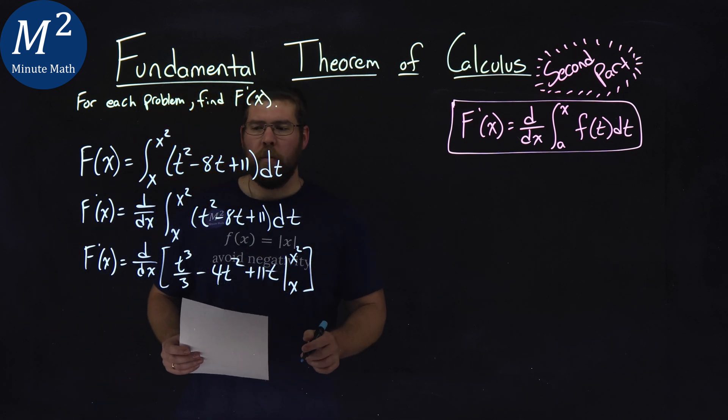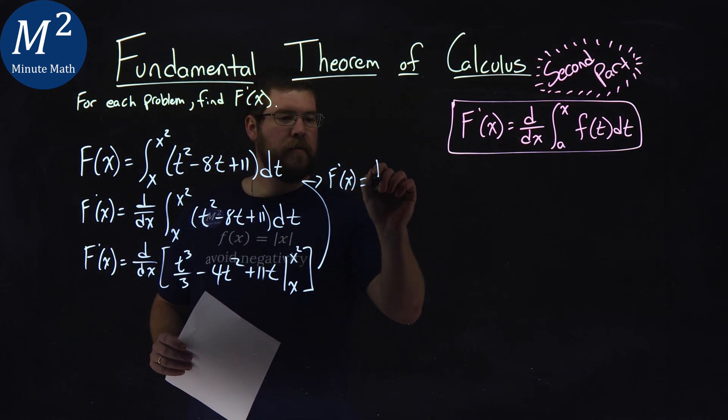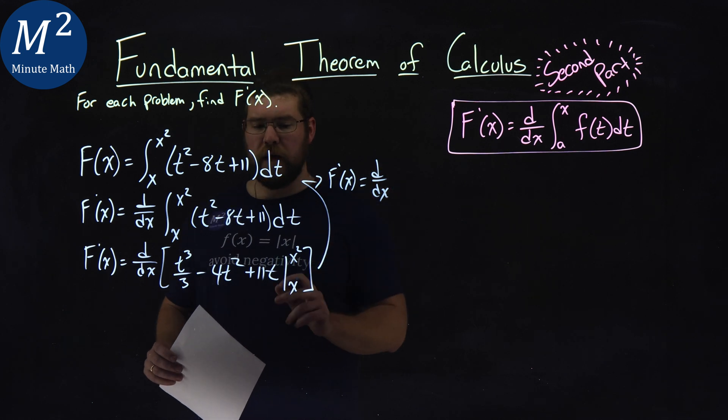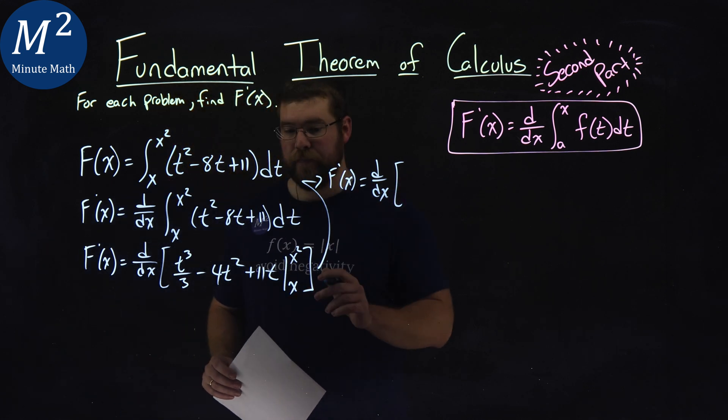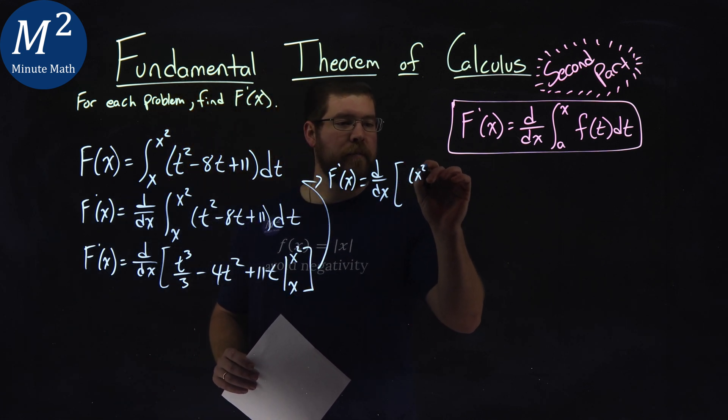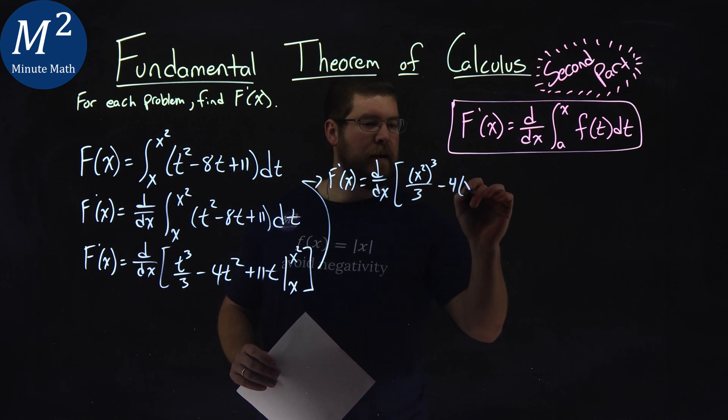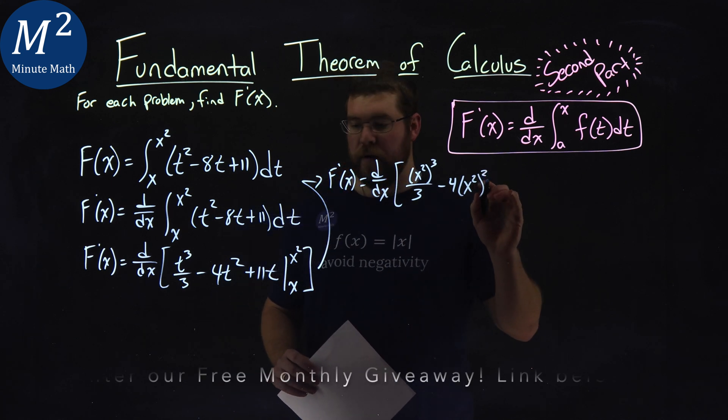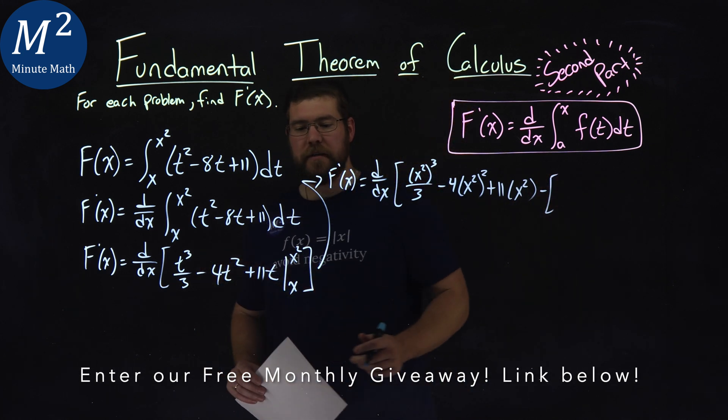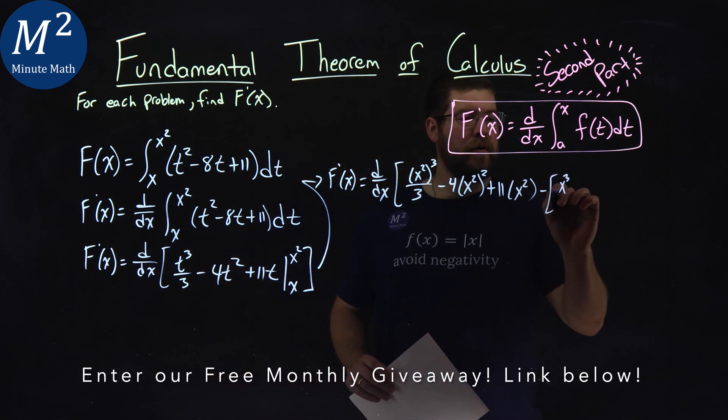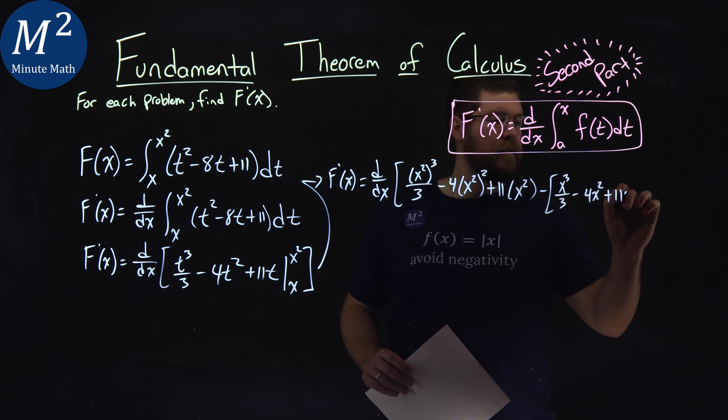Okay. Well, what I'm going to do now, I'll put it over here so it's a little easier to see. f prime of x is equal to d over dx. Our rules still apply. We're going to plug in x squared first for t, and then we'll plug x in for t and we subtract it. So, x squared in for t, we have x squared to the third power over 3 minus 4 times x squared to the second power plus 11 times x squared. Subtract when we plug in x in for t, and that's pretty simple. So, x to the third over 3 minus 4x squared plus 11x.